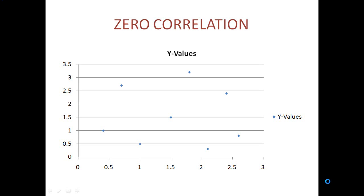In the previous few videos we learnt about the various types of correlation. Those were the cases where the two variables we considered had correlation between them. But it is possible that the variables are not correlated, or they have zero correlation. So let us see what we imply by zero correlation.